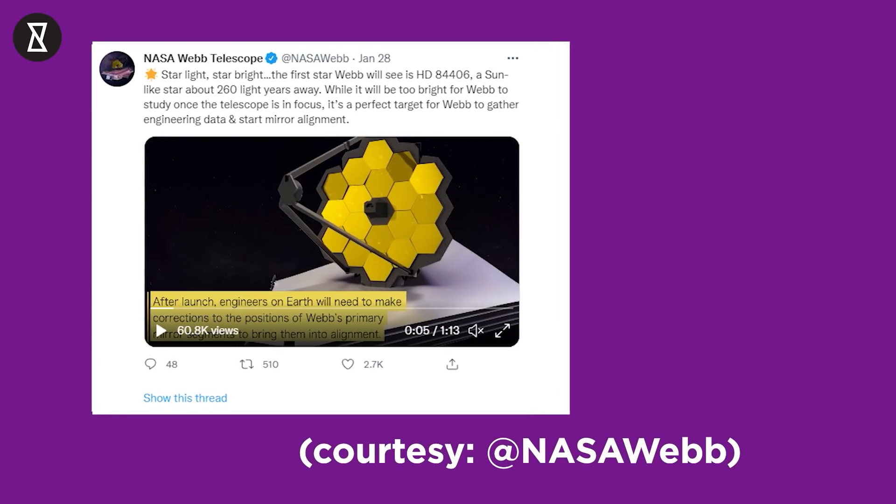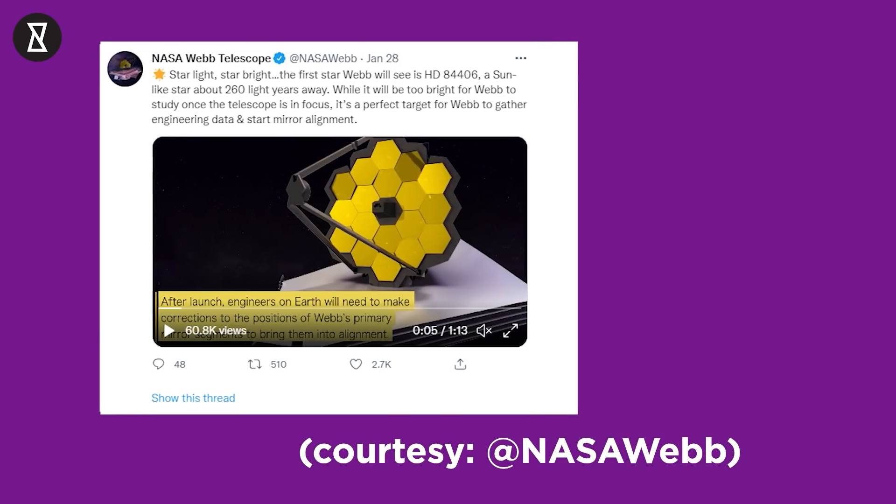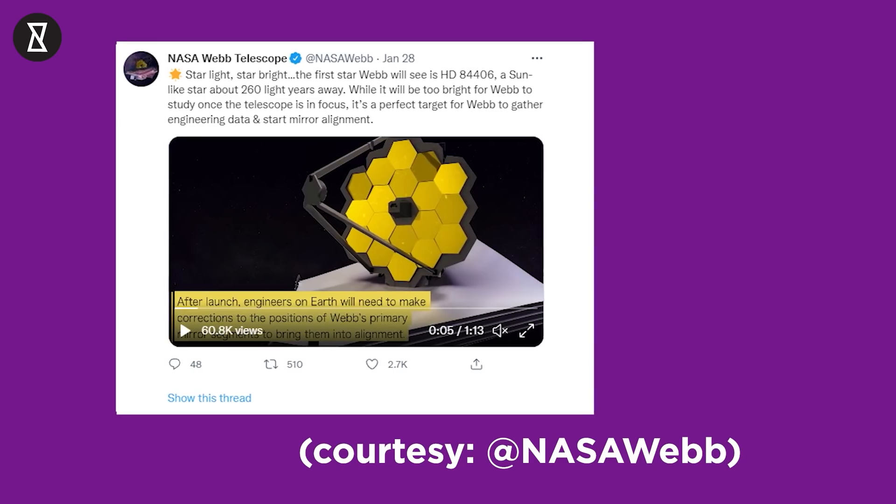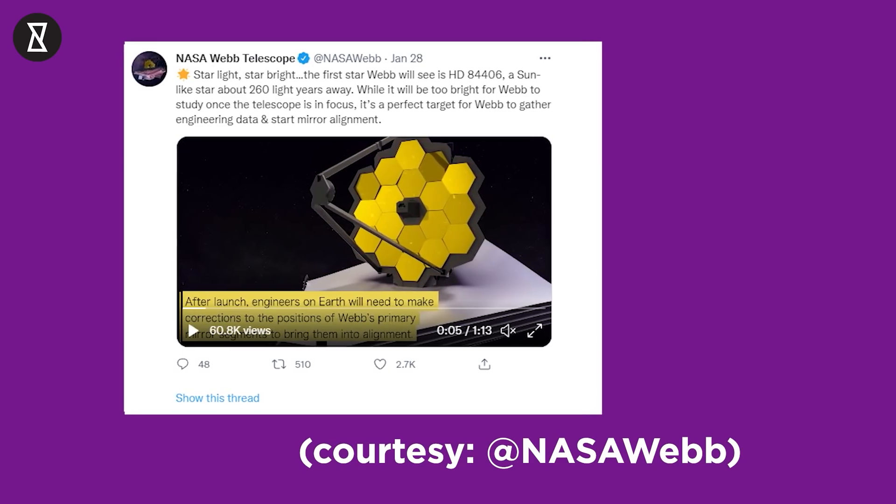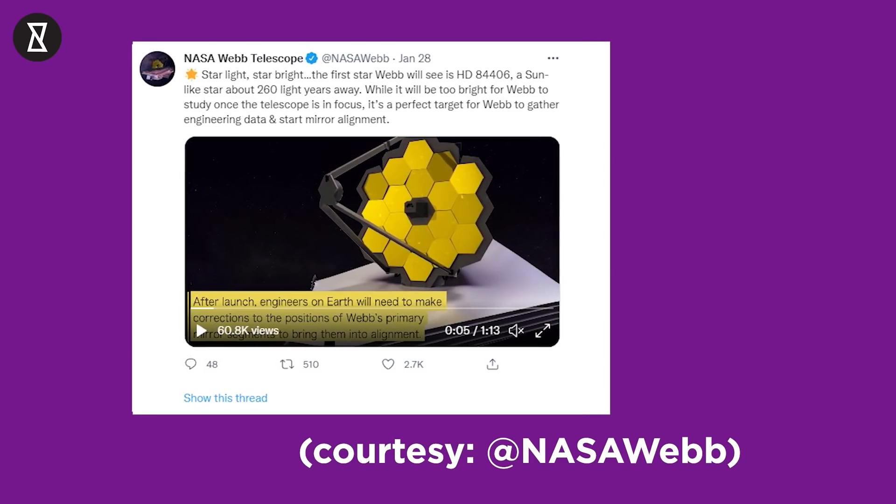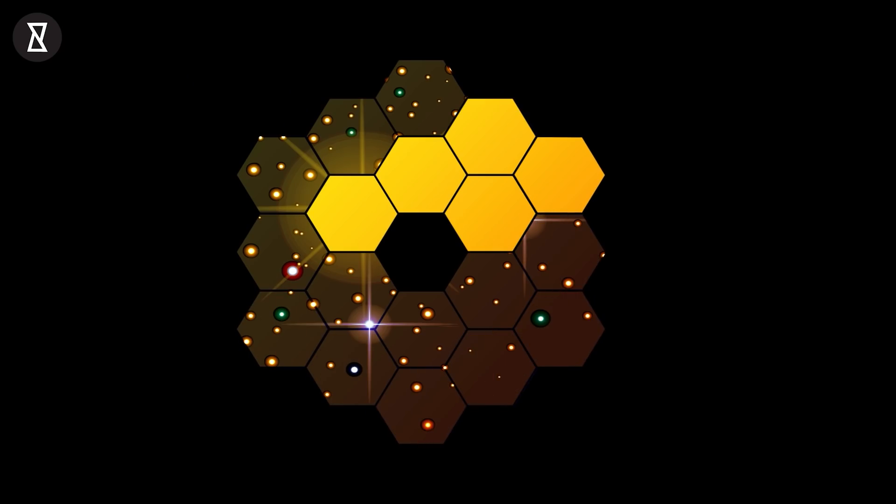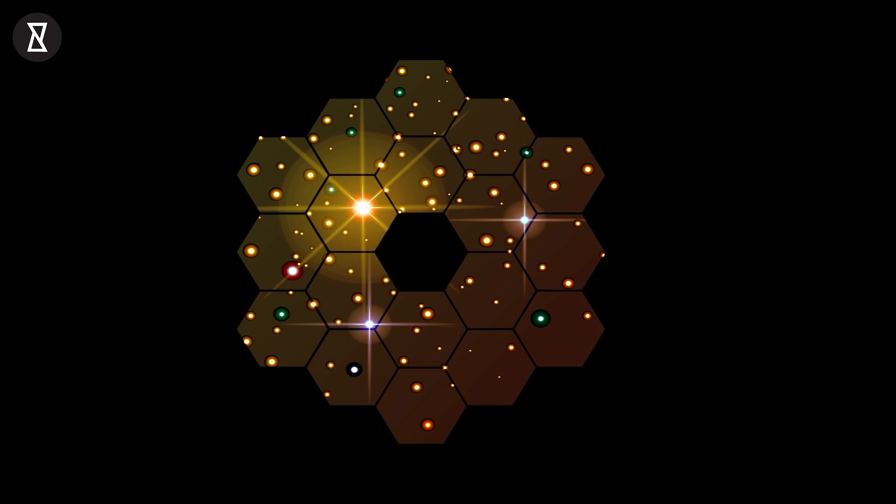Starlight, star bright, the first star Webb will see is HD 84406, a sun-like star about 260 light-years away, the space agency wrote on the NASA Webb Twitter account. While it will be too bright for Webb to study once the telescope is in focus, it's a perfect target for Webb to gather engineering data and start mirror alignment.